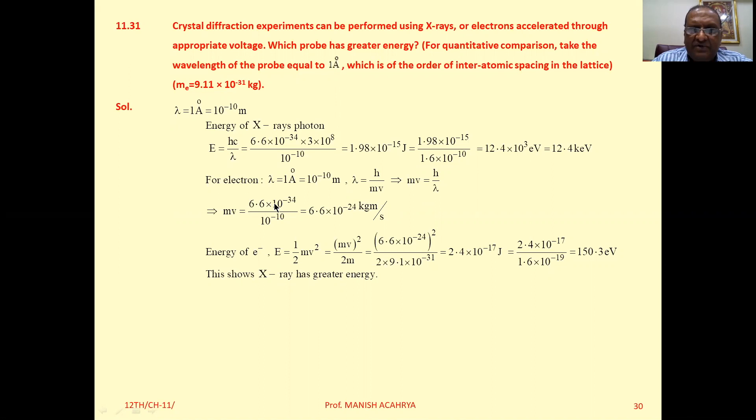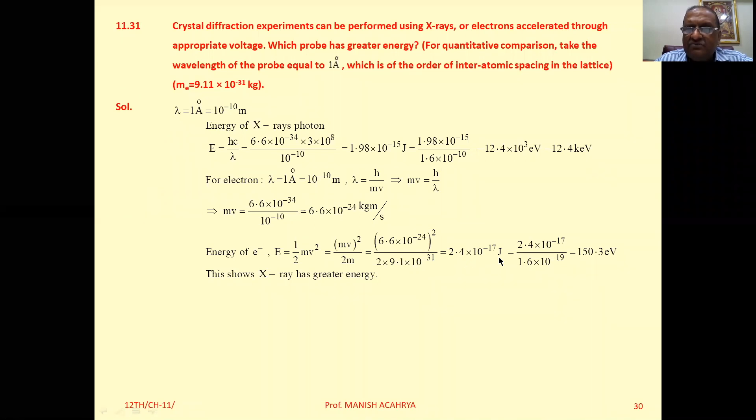Substitute the value of h and lambda, you will get momentum. Then substitute the value of momentum here, square of it, 2 into mass of electron, and you will get energy in terms of Joule.